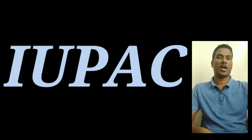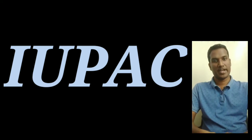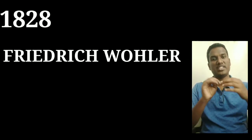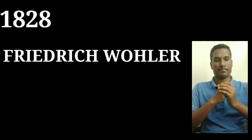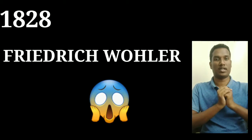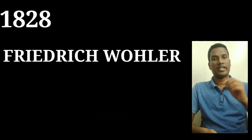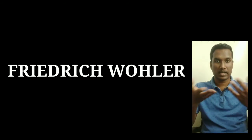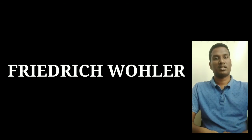History of IUPAC: In 1828, Friedrich Wöhler was preparing ammonium cyanate. He was able to prepare urea from it. This was an organic material — urea is an organic compound. It is made of carbon.